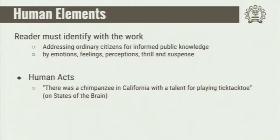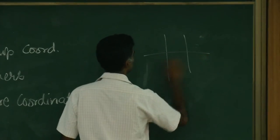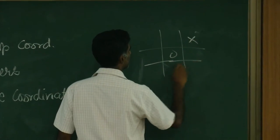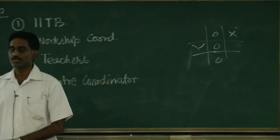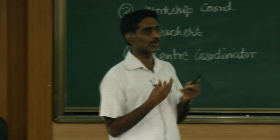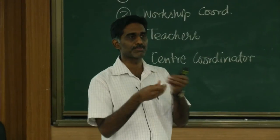She writes: 'There was a chimpanzee in California with a talent for playing tic-tac-toe.' The author begins by telling about a chimpanzee in some zoo which was playing tic-tac-toe — a game everybody plays, not just scientists. If you start an article saying there was a chimpanzee playing tic-tac-toe, there are two contradictory things right there. That is what makes it bring in a human element.